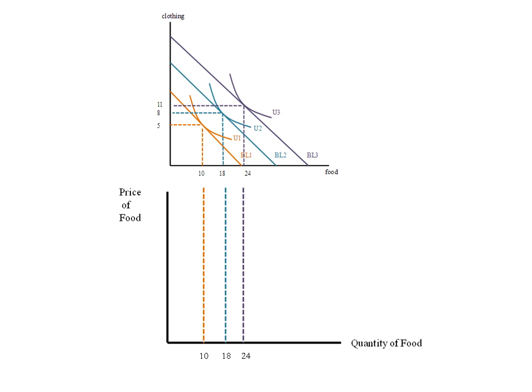I can take my optimal bundle quantities down. My quantity of food was 10 when my income was $40, 18 when my income was 68, and 24 when my income was $92. This was all for the price of food being held constant at $2.